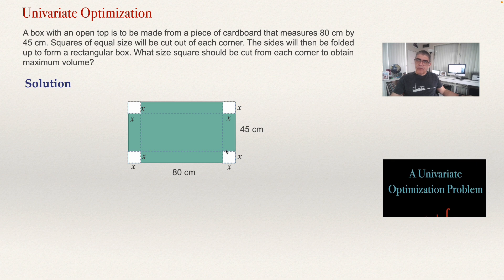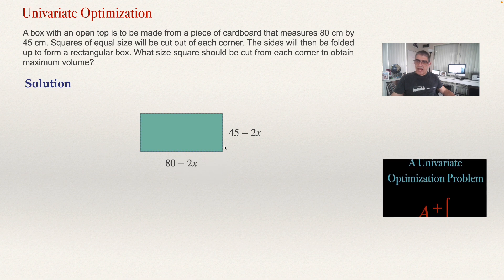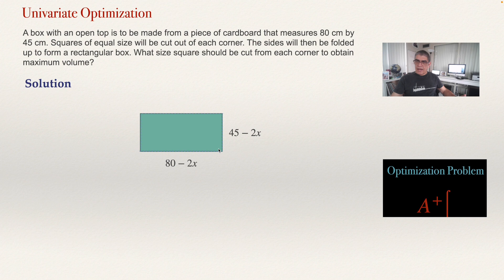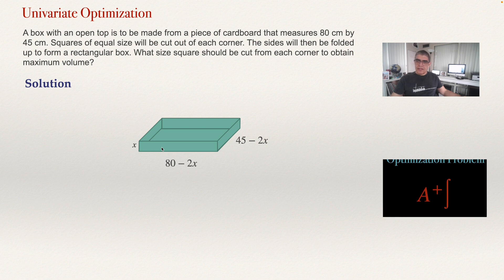After you fold, if you see the box from the top it looks like this. The sides will be 80 minus 2x and 45 minus 2x. If you see this box from the side it will look like this. The height will be x. So we are going to have a box that is easy to compute the volume for.